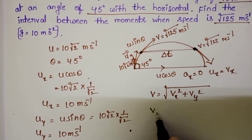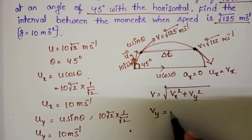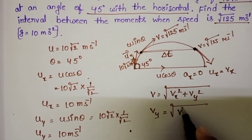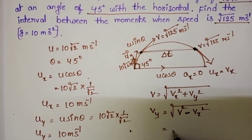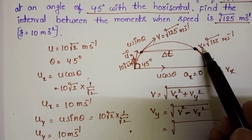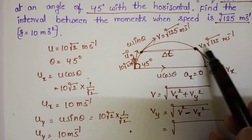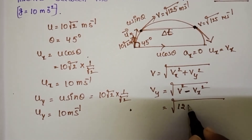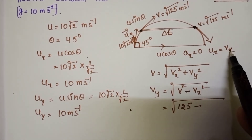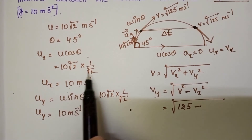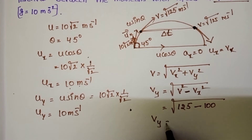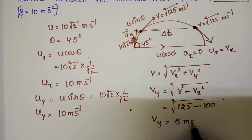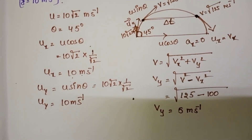From this, vy = √(v² - vx²). The final velocity v = √125, so v² = 125. And since ux = vx = 10 meter per second, vx² = 100. Therefore vy = √(125 - 100) = √25 = 5 meter per second.